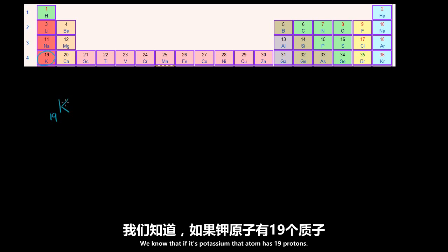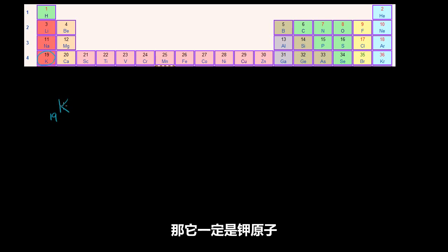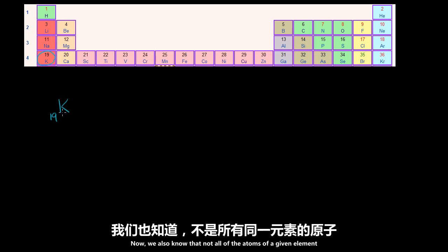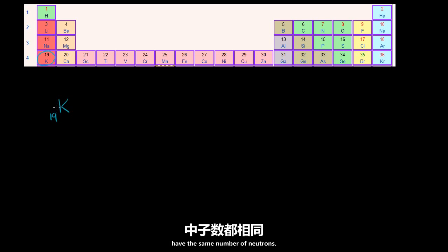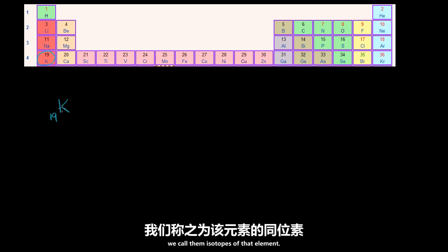We know that if it's potassium, that atom has 19 protons. And we know if an atom has 19 protons, it is going to be potassium. Now, we also know that not all of the atoms of a given element have the same number of neutrons. When we talk about a given element but with different numbers of neutrons, we call them isotopes of that element.